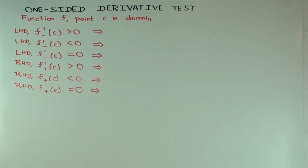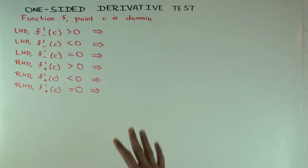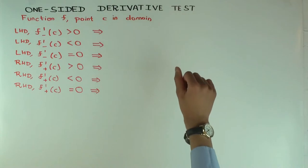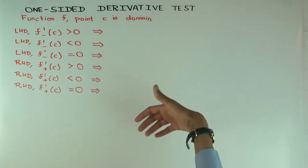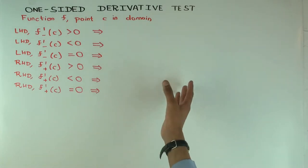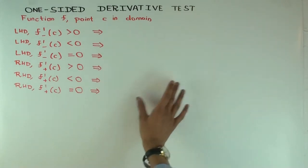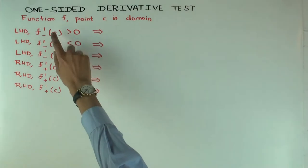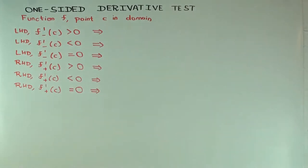In this talk I'm going to consider a one-sided derivative test. This is not very standard terminology — it's sort of like the first derivative test but not quite. The first derivative test uses the sign of the ordinary two-sided derivative on the left and right of a point to determine local extrema. The one-sided derivative test does something similar, but you look at the one-sided derivative at the point itself. So if the left-hand derivative at the point is greater than zero, what can you conclude about whether it's a max or min from the left?